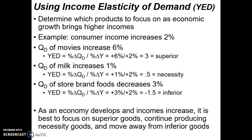Let's look at some examples using income elasticity of demand. For a government or firm, as a nation develops and incomes rise, it's important to know which products to focus on. Say consumer income increases 2% in a given year, and the quantity demanded of movies went up 6% during that same year. Plugging into the formula — percent change in quantity demanded of 6% over percent change in income of 2% — positive 6 over positive 2 equals 3.